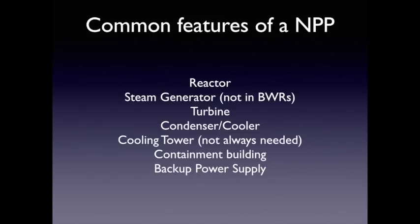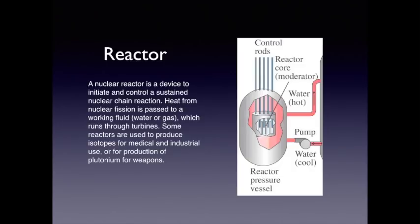Looking at the reactor itself — we can see it has a pressure vessel, a core with a moderator, and control rods which can slide in and out of the reactor. The nuclear reactor is a device to initiate and control a sustained nuclear chain reaction. Heat from nuclear fission is passed to a working fluid — which can be water or gas — which runs through the turbines. Some reactors are used to produce isotopes for medical and industrial use, or for the production of plutonium for weapons, as the initial reactor Calderhal was used for many years.